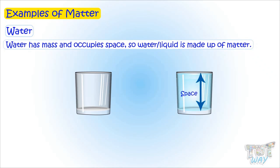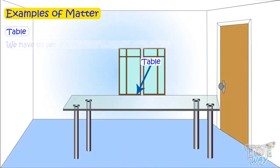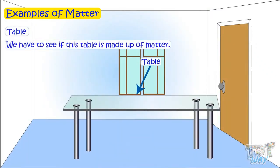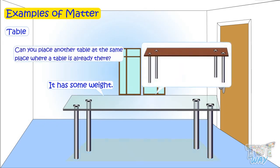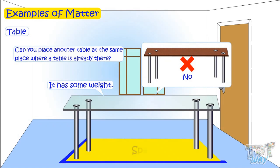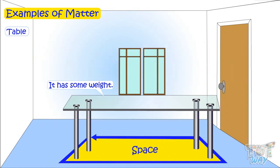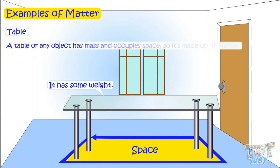Now here is another thing and it is a table. We have to see if this is made up of matter, and for that we have to prove it has mass and it occupies space. Weigh the table — it has weight. Now can you place another table at the same place where a table is already there? No, you cannot. So the table occupies space. So a table or any solid object has mass and occupies space — so it is made up of matter.